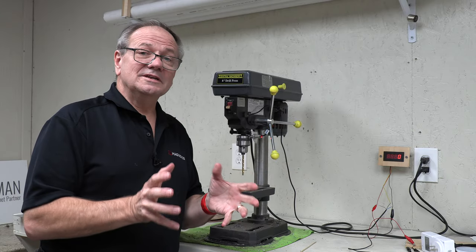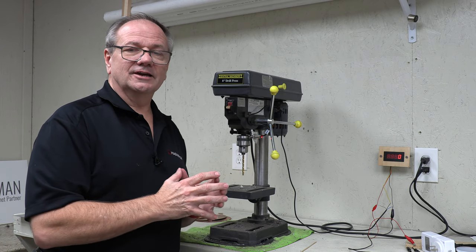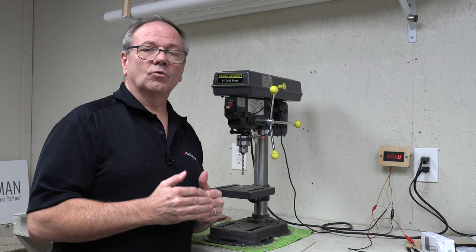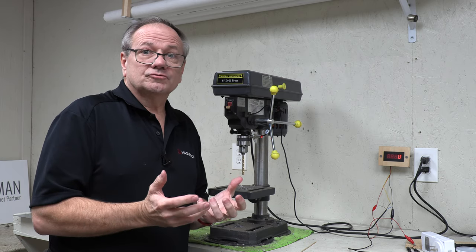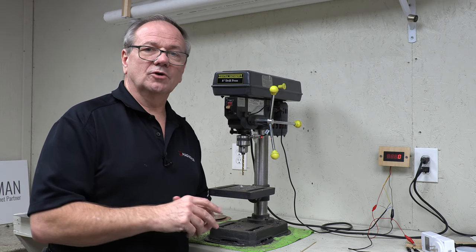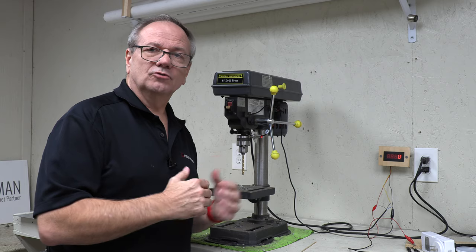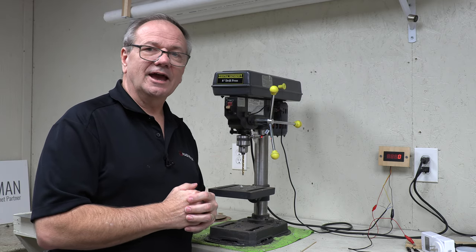You remember back when we did the eddy current drag experiment, and we had to get all that data. Well, one of the pieces of information we really needed was the rotational speed, the RPM of our drill, so we could tell when it was slowing down. And drills don't usually come with that, or at least small drill presses like this don't. So we needed to add one.